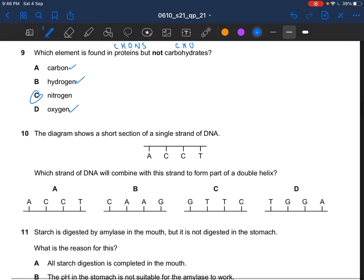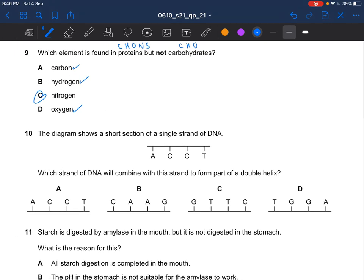Next question. The diagram shows a short section of a single strand of DNA. Which strand of DNA will combine with this strand to form part of a double helix? Adenine is complementary to thymine. Guanine is complementary to cytosine. This is something that you need to know. And hence, A would pair to T, C would pair to G. So the answer is D.